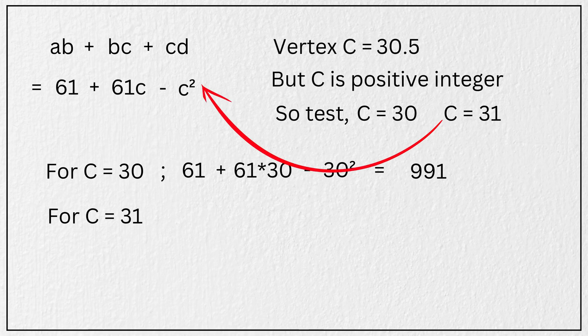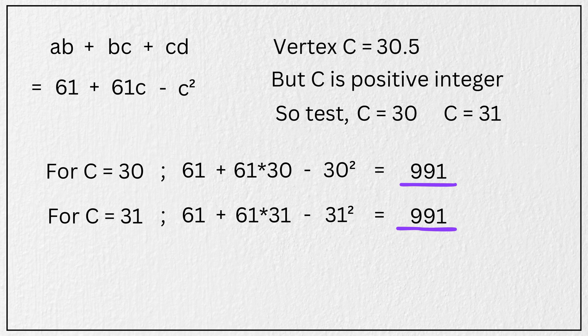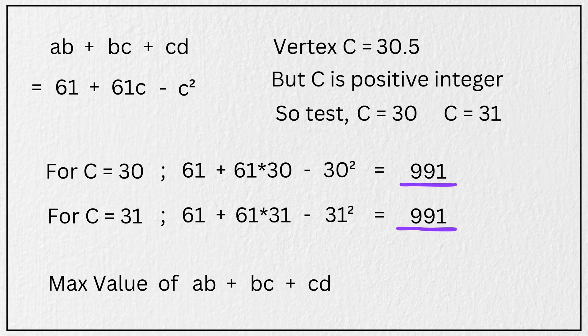And substituting C equal to 31, we get 61 plus 61 times 31 minus 31 square, which again simplifies to 991. Surprisingly, we get the same answer both way. So the maximum possible value of the expression A times B plus B times C plus C times D is 991. And that's our final answer.